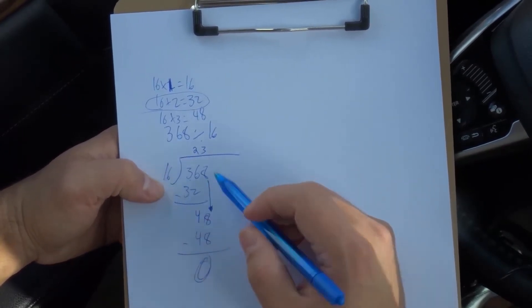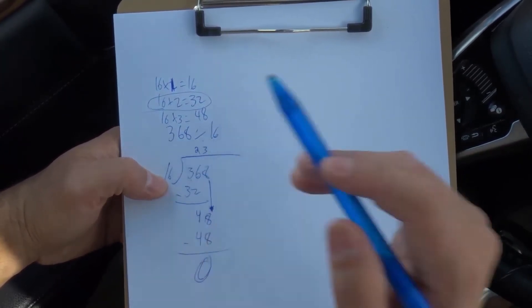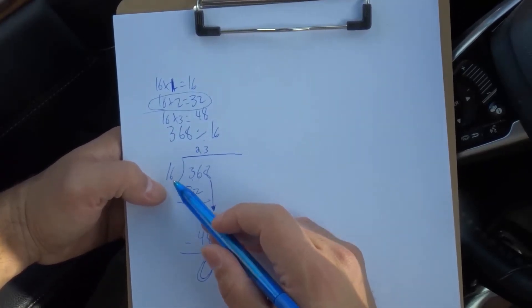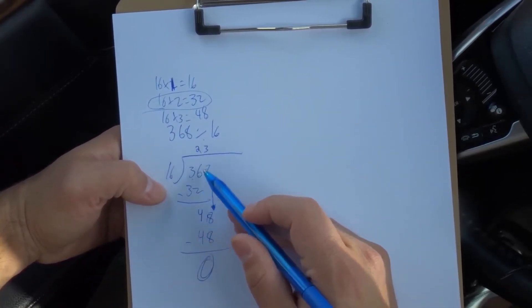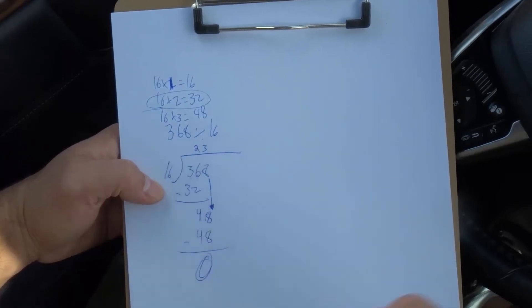So 368 divided by 16 is 23. That's our answer. So I'm going to do another example.